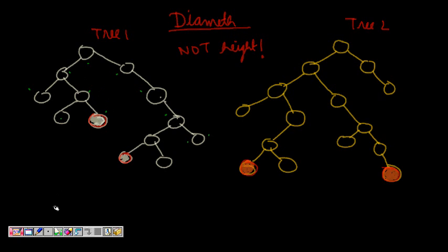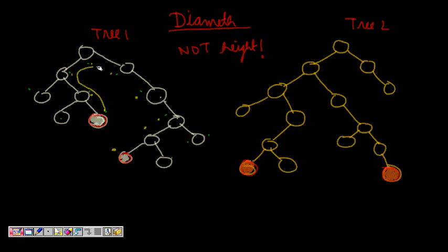Is there any bigger? Let's see: 1, 2, 3, 4, 5, 6, 7, 8, 9. So this, I think, is the biggest diameter — the number of nodes between two leaf nodes. In fact, these also form a diameter, but you need to tell just one: what is the maximum number of nodes in the path between two leaf nodes, including those leaf nodes themselves? So this is the diameter of the tree.